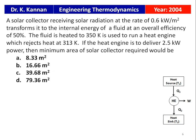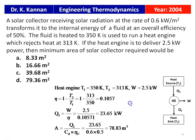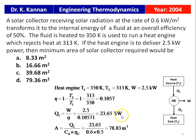We have a heat engine operating between T1 = 350 Kelvin and T2 = 313 Kelvin, producing W = 2.5 kW. η = 1 − T2/T1 = 1 − 313/350 = 0.1057. The amount of heat supplied to the heat engine: Q1 = W/η = 2.5/0.1057 = 23.65 kW. So the heat absorbed by the heat engine is 23.65 kW, which is the amount of heat given by the solar panel.